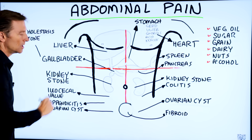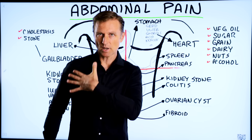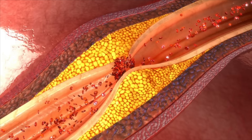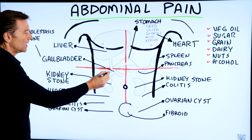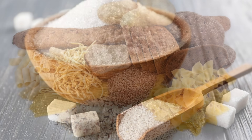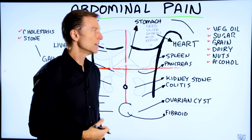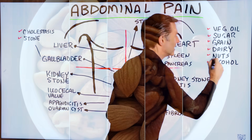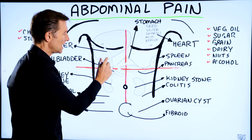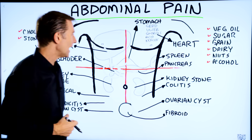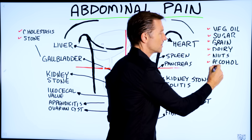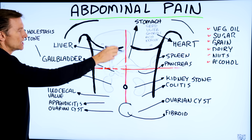Now the gallbladder — if you have discomfort above the ribcage on the right side, this is definitely going to be the gallbladder. It's not necessarily always a stone; it could be sludge or some type of dysfunction. Certain things irritate it: vegetable oils, sugar, and refined grains will do it. Dairy can irritate the colon if you have an allergy. Nuts will definitely irritate the gallbladder — there are enzyme inhibitors in nuts that really irritate the bile ducts. Alcohol will really irritate this area big time.